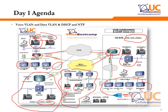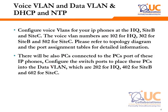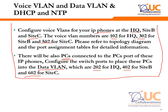Each location has been provided with its own respective subnet — refer to your lab kit to identify which subnet goes where. You are given a task to configure VLANs for your IP phones based on HQ, Site B, and Site C respectively. The voice VLAN numbers are 102, 302, and 502 for HQ, Site B, and Site C. Because a PC is also connected to the IP phone, you need to pay attention to the data VLAN as well. Data VLANs are defined as 202, 402, and 602 respectively.